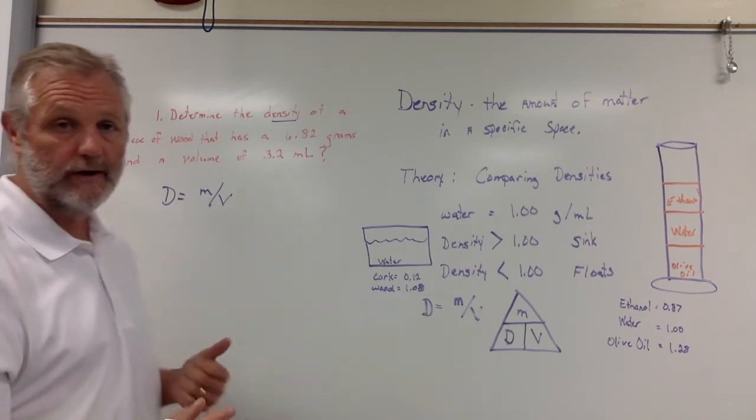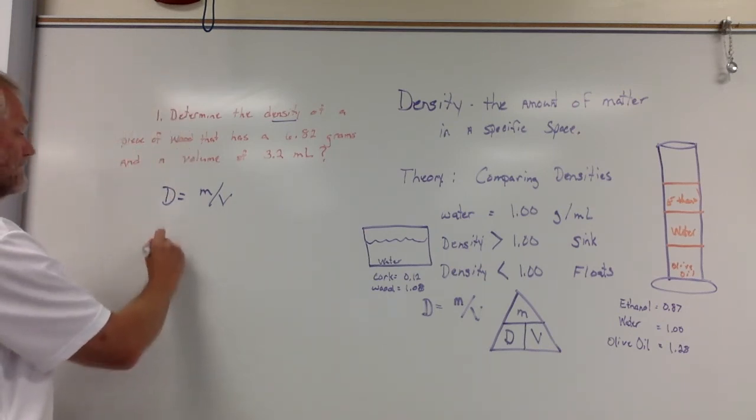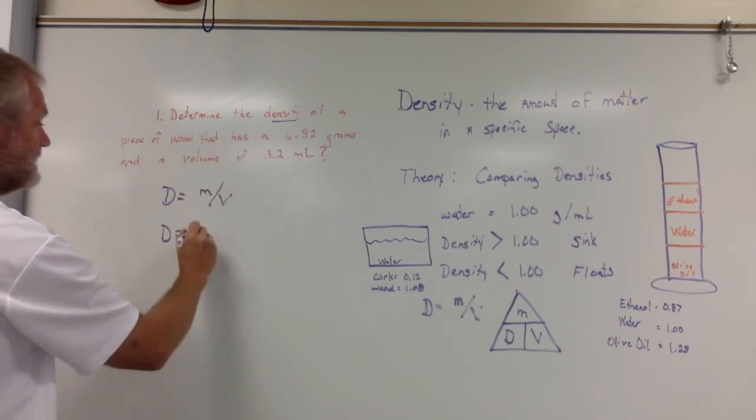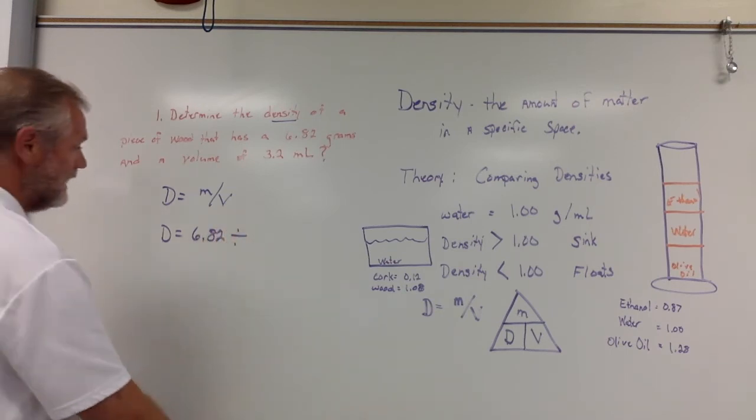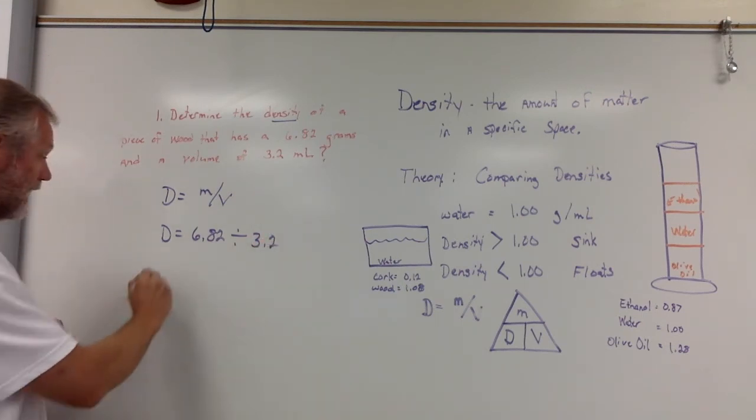The second thing that we include is the information. We need to plug the numbers in. So density is equal to, and in this case, we have a mass of 6.82, and it's going to be divided by 3.2. And finally, we will put the density with its units.